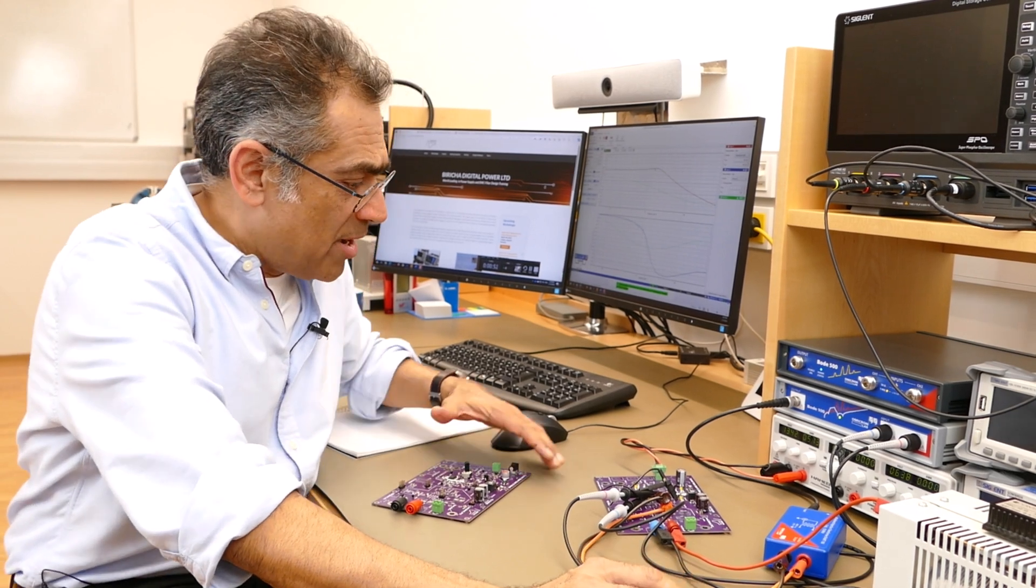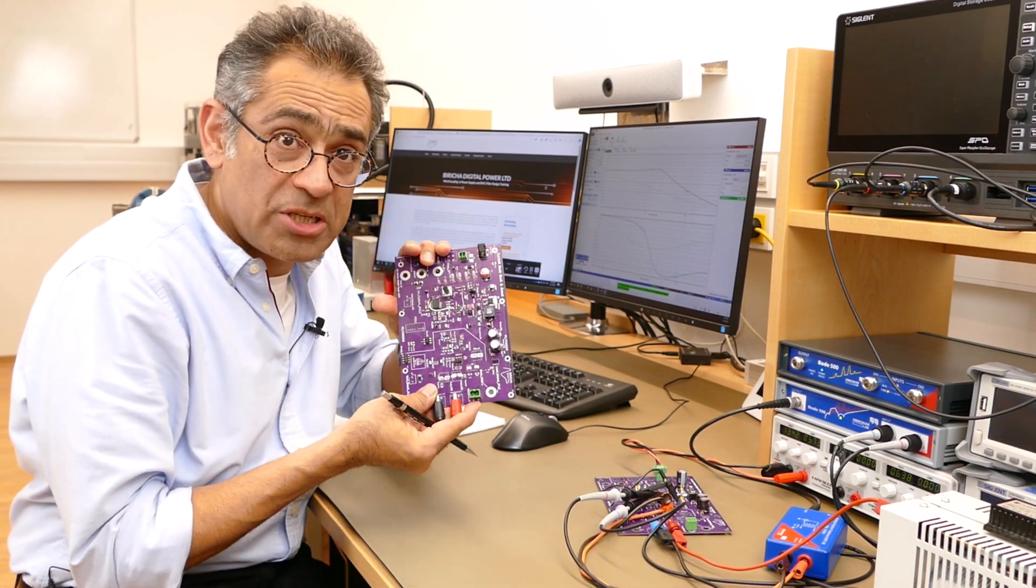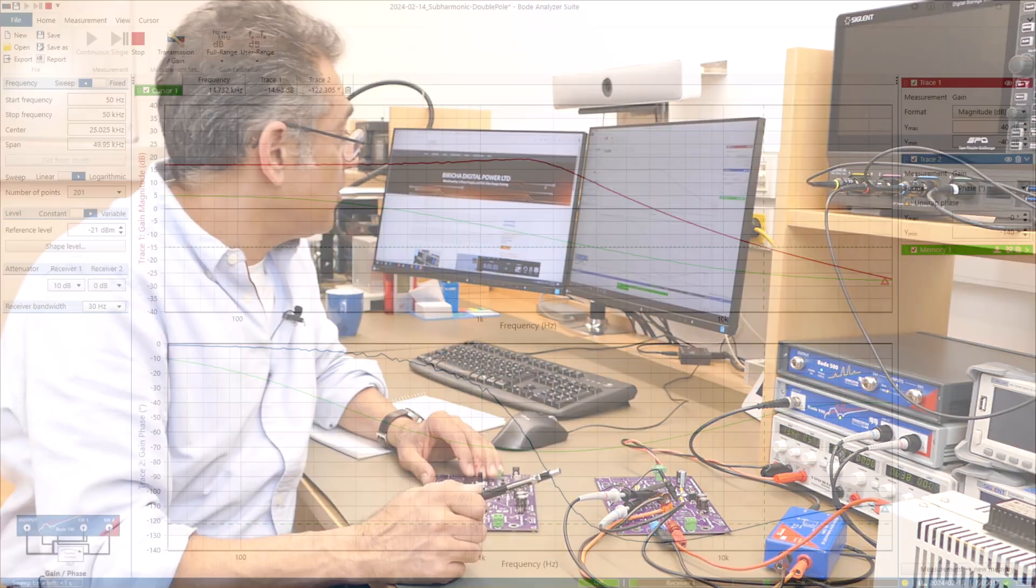Okay, so here we are in the lab. I have got a buck converter in voltage mode and I've got an identical one in terms of topology in current mode, and we're going to look at the plant of both of them. So at the moment I'm looking at the plant of my voltage mode.